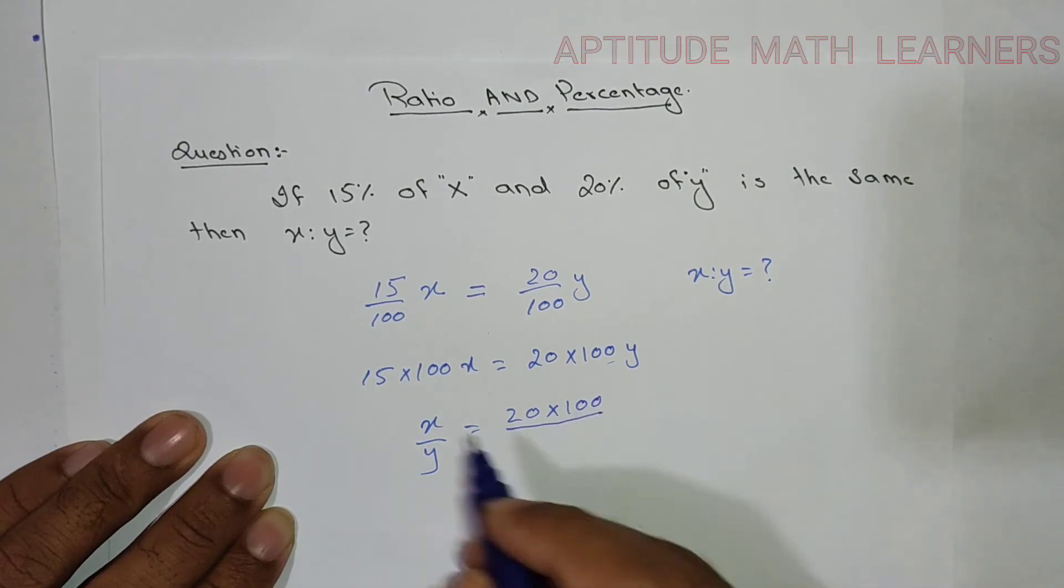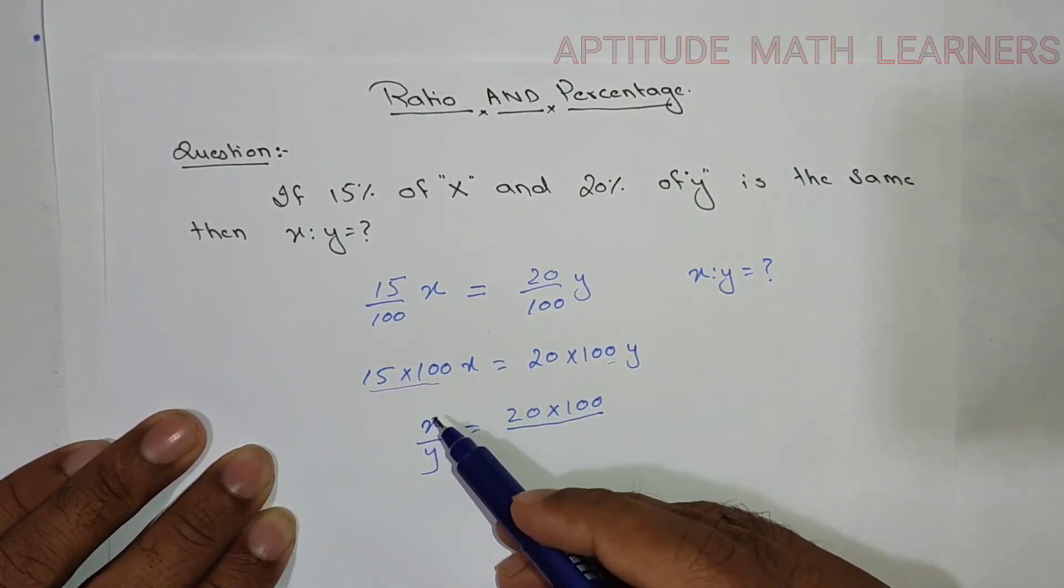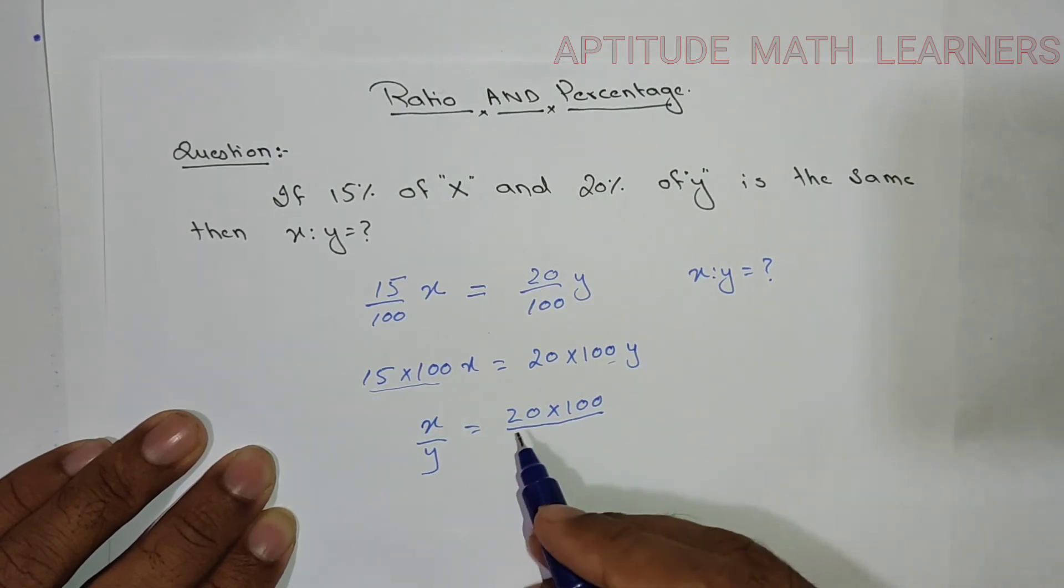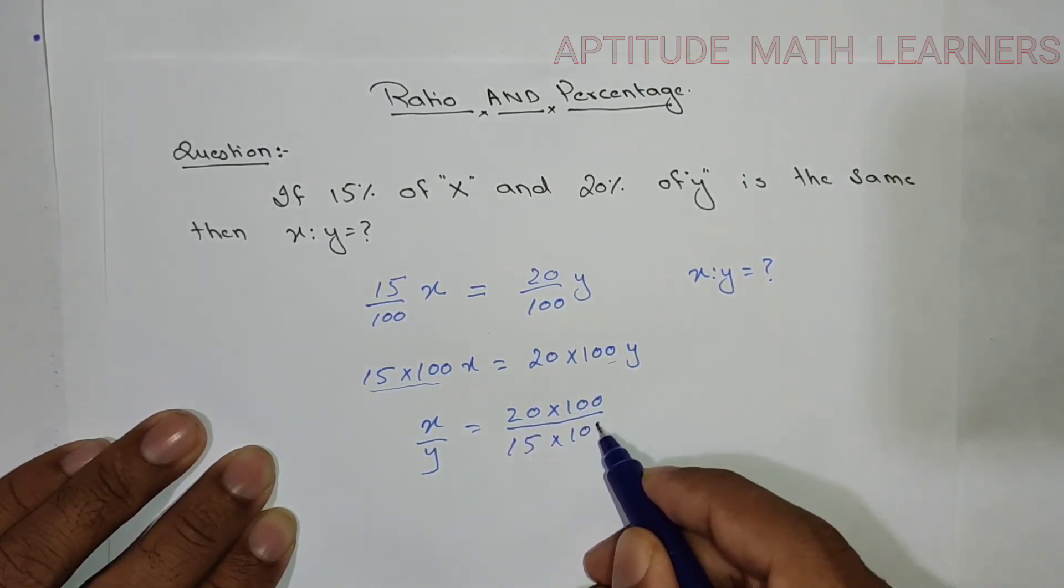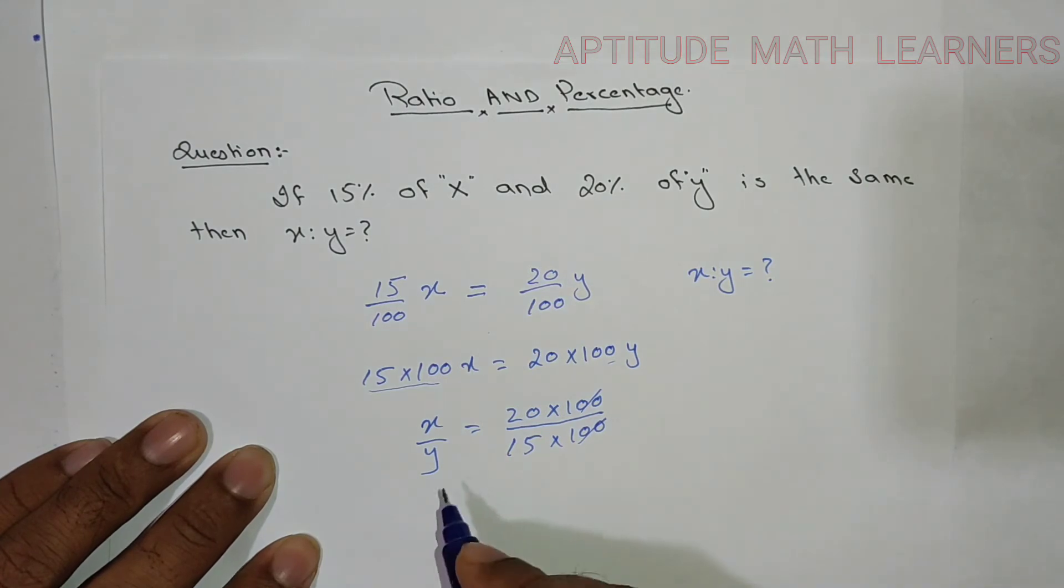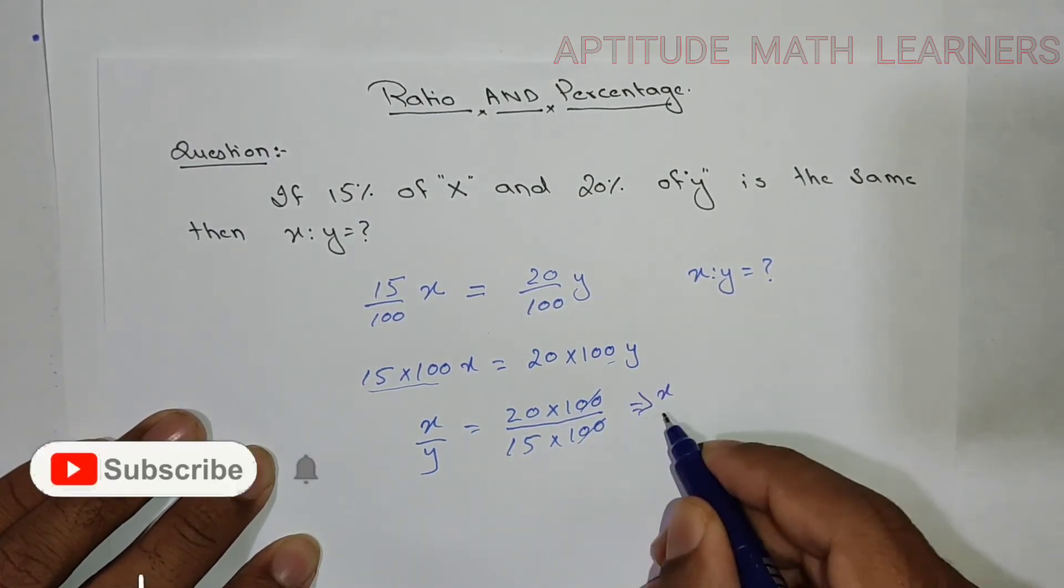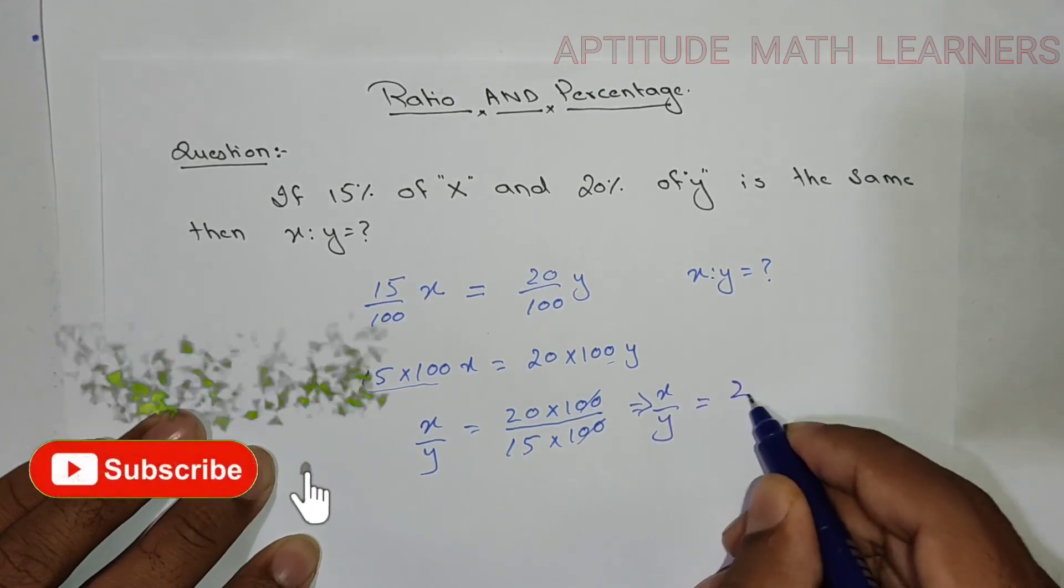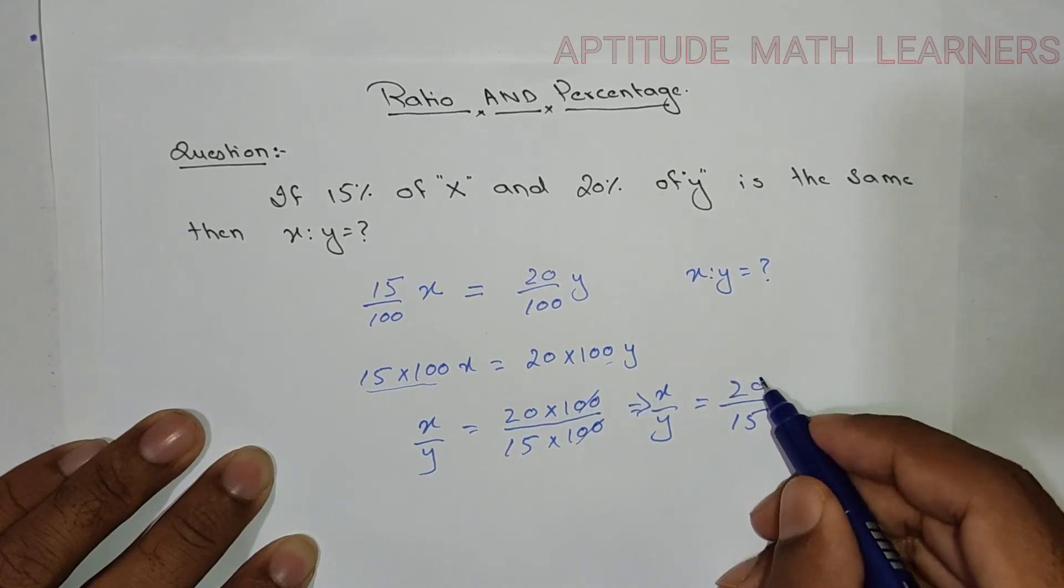This portion goes to this side just to make x and y in a proper ratio form. So it becomes 15 × 100. Here 100 and 100 cancel with each other. So what we get is x upon y is equal to 20 upon 15.